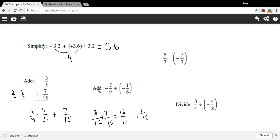Let's try some more work with fractions. Here we're adding negative 7 ninths plus a negative 1 sixth. Really, we're subtracting negative 7 ninths minus 1 sixth. Again, we need to get the denominators the same.